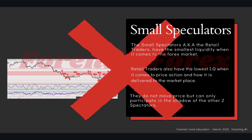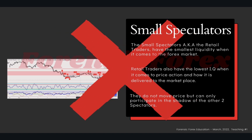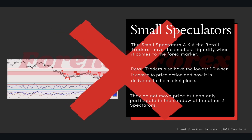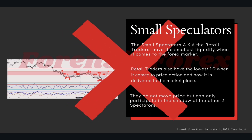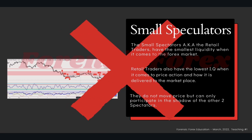This is an old slide from the first lesson on Forensic Forex. You can see that small speculators, also known as retail traders, have the smallest liquidity in the forex market. Retail traders have the lowest IQ when it comes to price action and how it's delivered to the marketplace. They do not move price but can only participate in the shadow of the other two speculators — commercials and large speculators. The commercial speculators are the ones that control the market. Do not be a small speculator. Period.